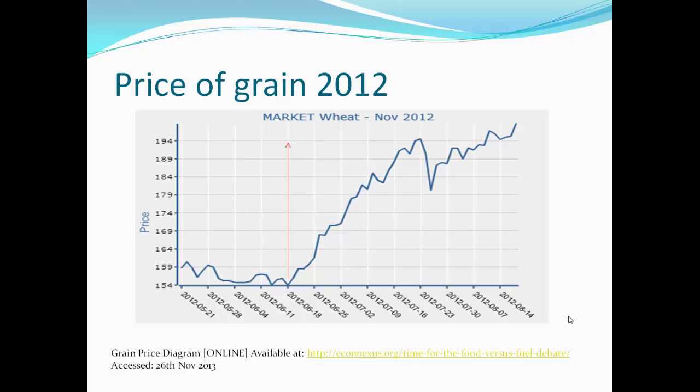This led to an increase in the price of grain worldwide due to a shortage of supply from America. As shown in this diagram, you can see that the price of grain increased from $154 to $194 within 6 weeks. This means that if you had forecasted this, there is a large profit to be made of up to $40 per unit that you buy. This also shows a downfall in the agricultural industry as they are not harvesting as many crops.